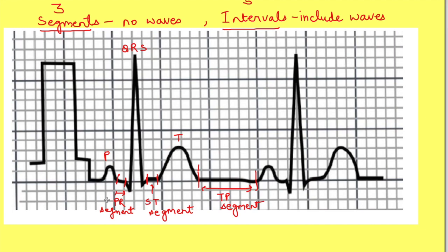Now let us see the intervals. PR interval is from the beginning of the P wave to the beginning of the QRS complex — it includes the P wave. ST interval is from the end of the QRS complex to the end of the T wave, including the T wave. QT interval is from the beginning of the QRS complex to the end of the T wave.